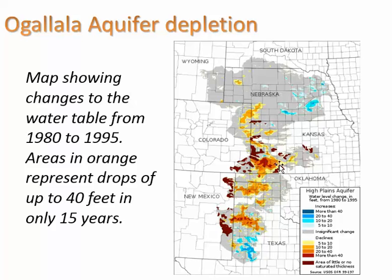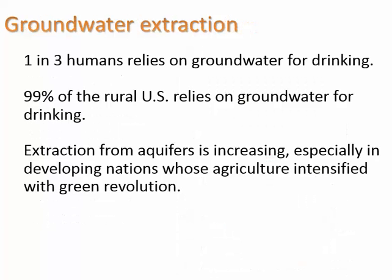We're seeing from this color that many areas of this aquifer are experiencing significant drops in the water table. The red, right here in the middle, is indicating more than 40 feet drop from the period of 1980 to 1995. Groundwater is a big deal — worldwide, one in three humans rely on groundwater for drinking, and 99% of the rural US relies on groundwater for drinking.